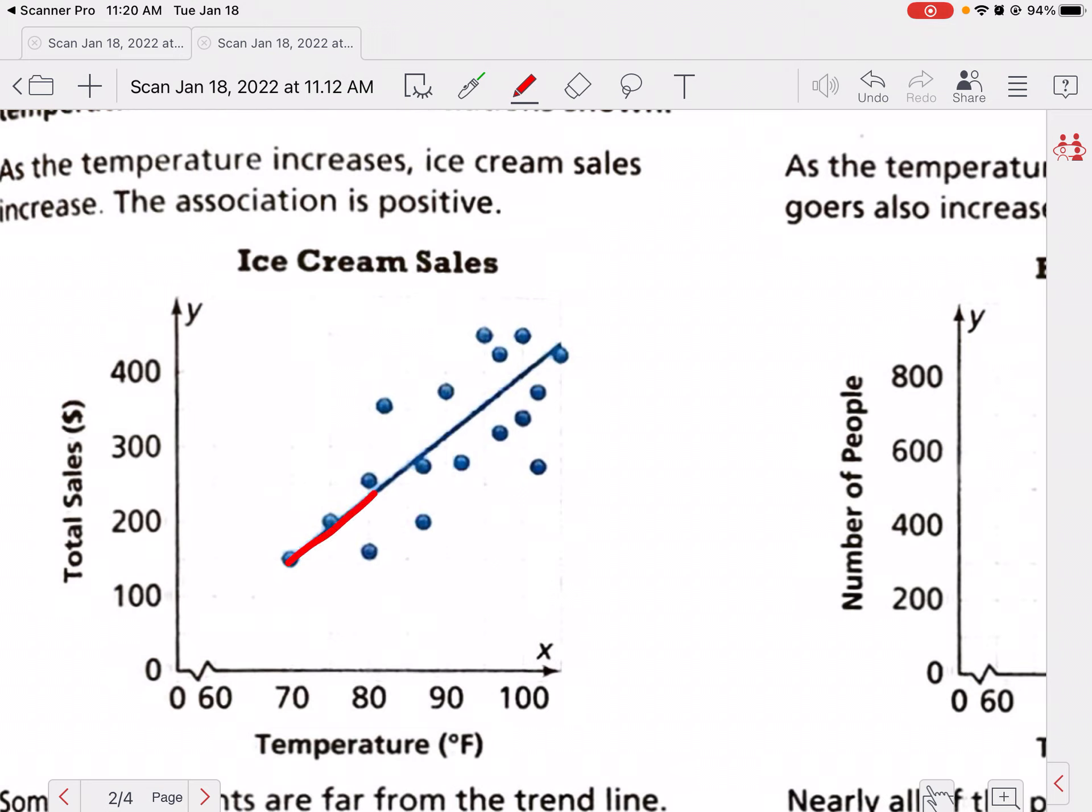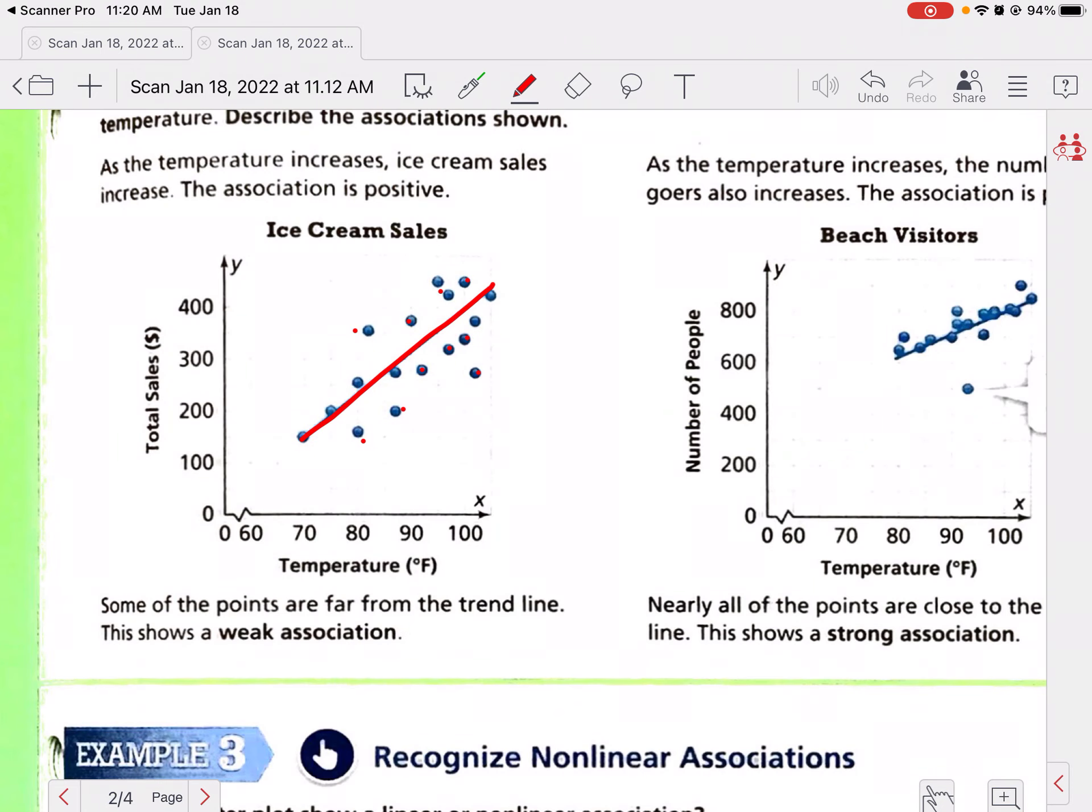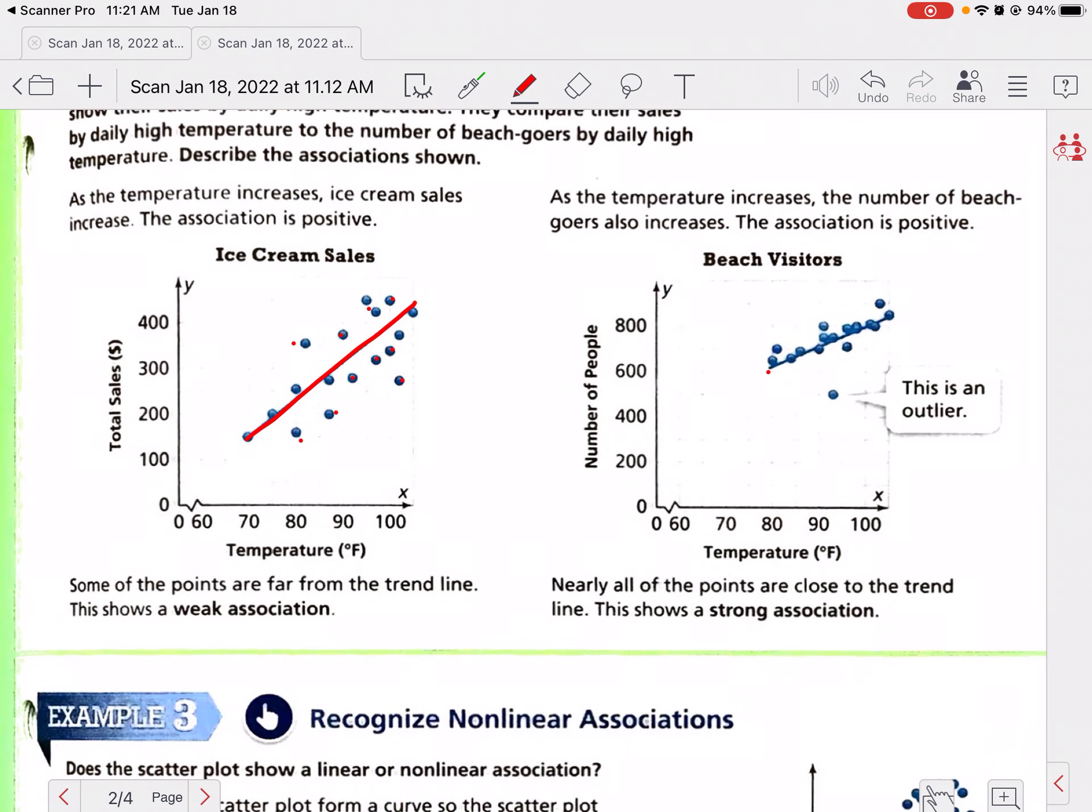If we look at this, as we're looking at this line we've drawn, there's data points that are a little bit further away from the line than others. We would call this a weak association because they're not all really close together on that line. But this one, we can see when we're drawing the line there's a lot of dots either on the line or really close to the line, and they're all really grouped together except for this little guy - he's an outlier. This would be a strong association because there's a strong association to that line of best fit or that trend line. What that means is there's a better chance that as the temperature goes up, the number of people are going to go up, whereas the temperature goes up but the sales may or may not go up. That's why we call it a weak association.